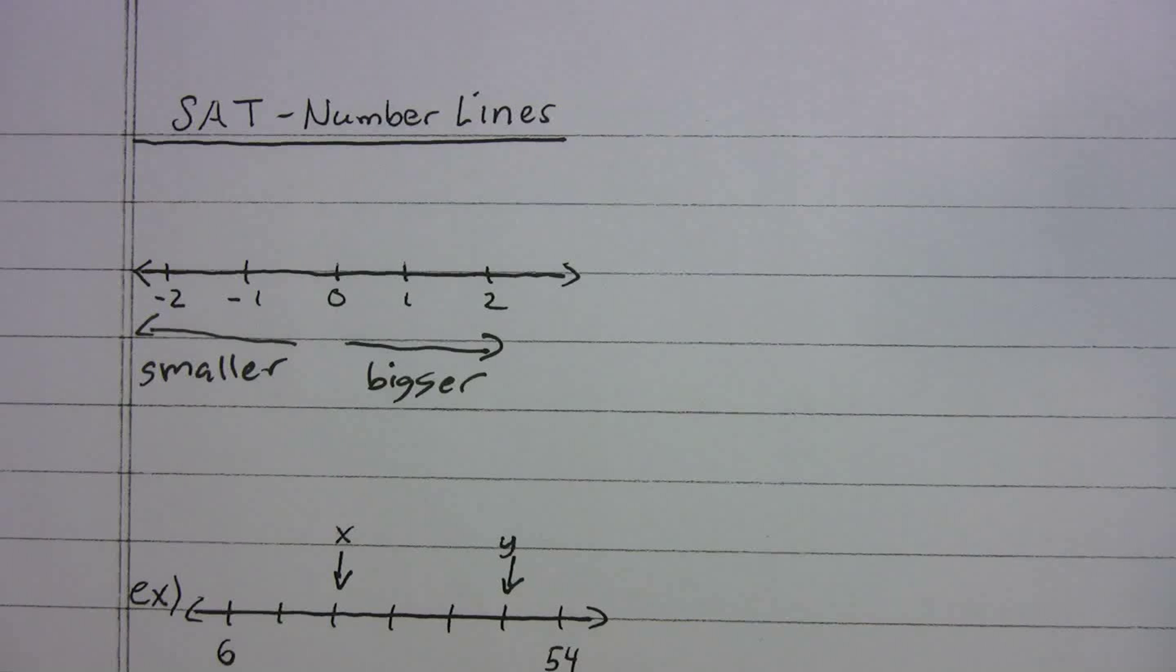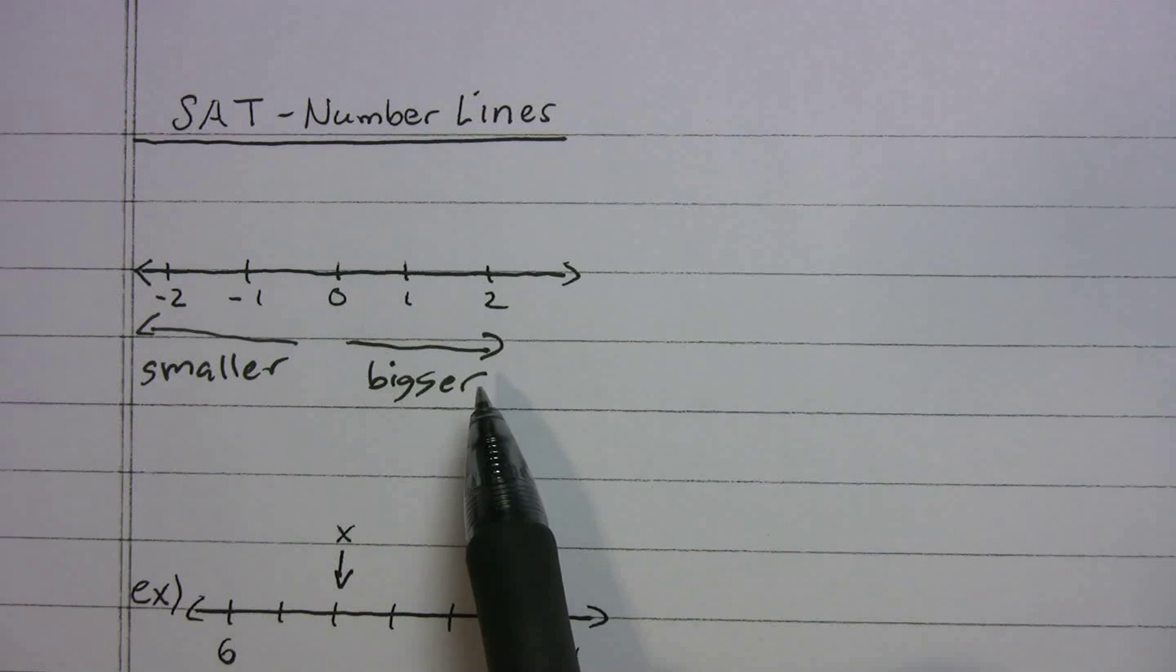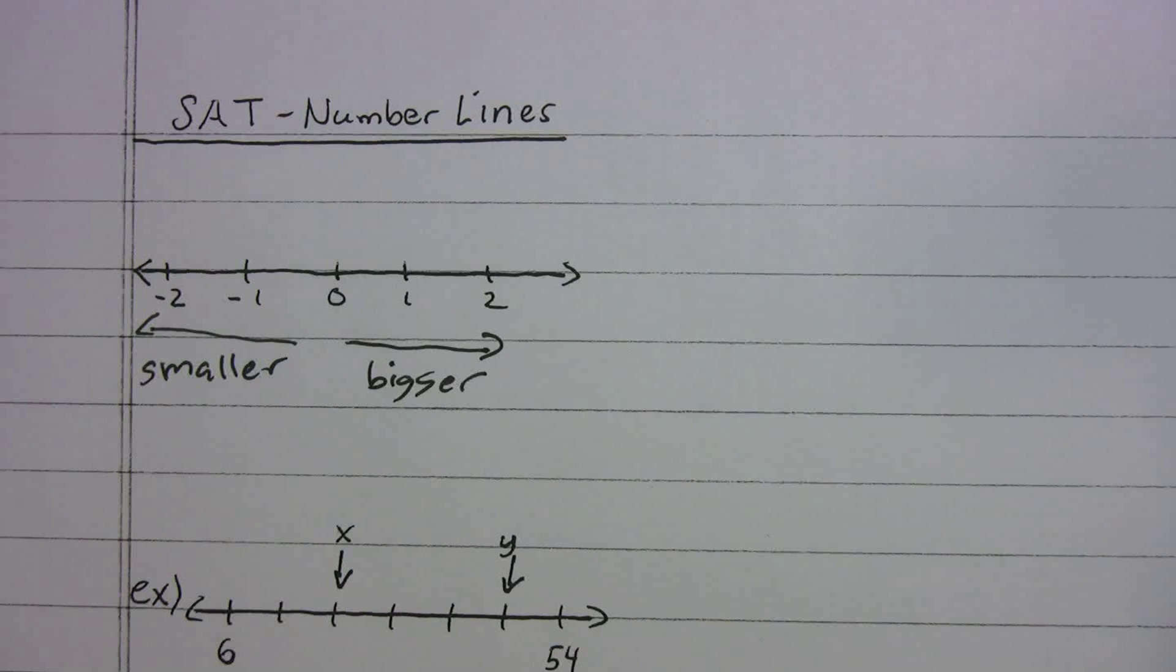The first thing you got to know, and it's really basic: when you go to the right on a number line, the numbers get bigger. As you go to the left, the numbers get smaller.